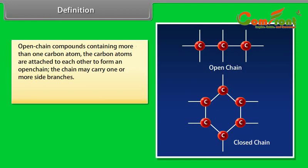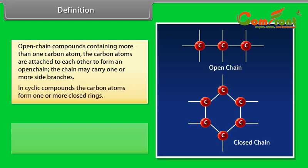In cyclic compounds, the carbon atoms form one or more closed rings. The two major groups are subdivided according to their chemical behavior into saturated and unsaturated compounds.